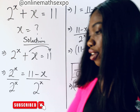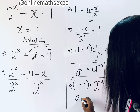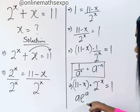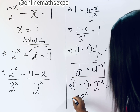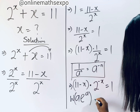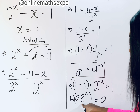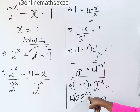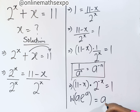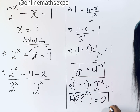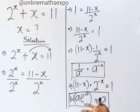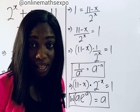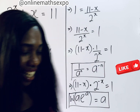Now remember something very important: whenever you have a function of the form a·e to the power of a, you can introduce the Lambert W function, and it gives you a. But observe that what we have here is base 2 and not e, and the power and coefficient are not yet the same. Don't worry — I'm going to teach you how to make them the same.